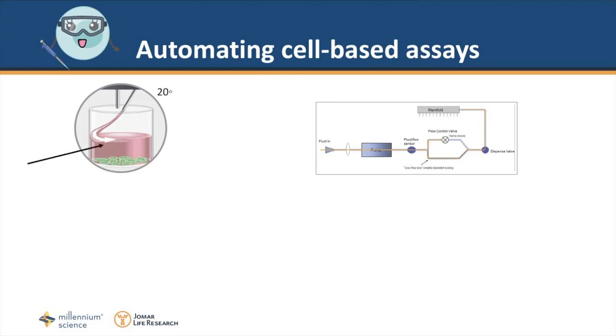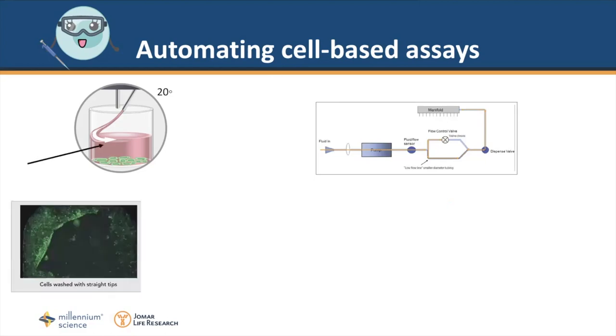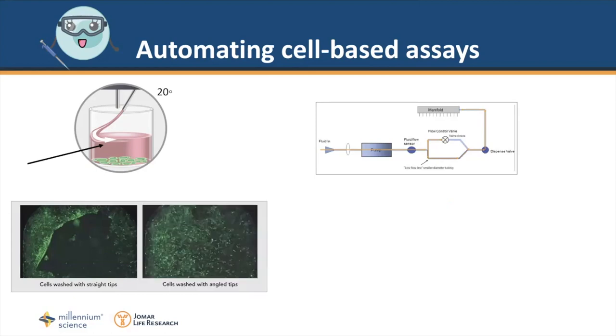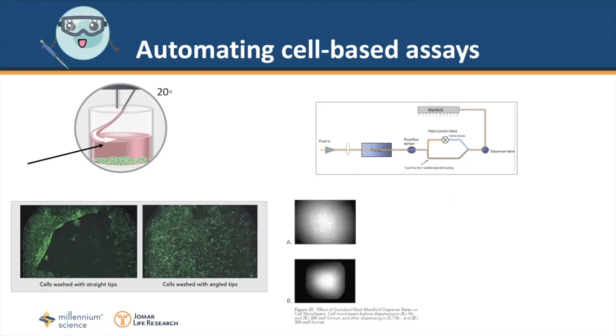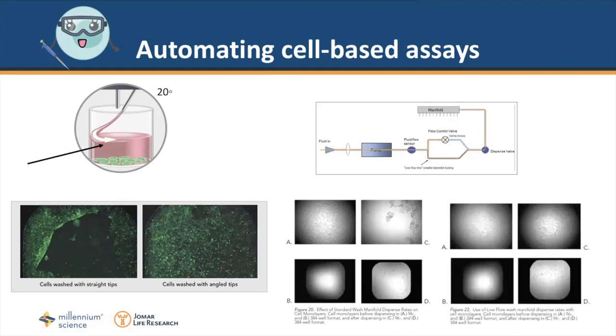Here is an example of cells washed with straight dispense tubes and the benefit of angling these tubes to the cell layer. Altering fluid flow is another way to reduce the vortex-like effect that is created by dispensing. You can see here an example of the damage from using standard dispensing rates on cells in a 96 and 384 well plate respectively. Here you can see the benefit of altering the fluid path.